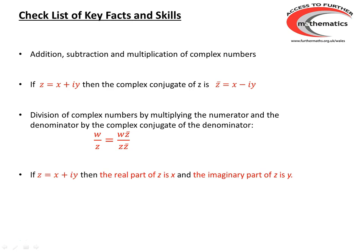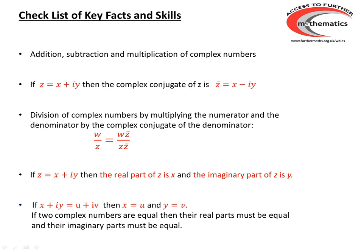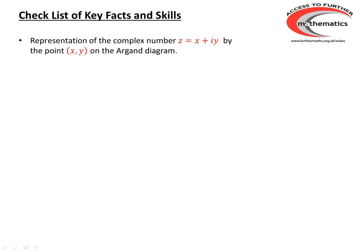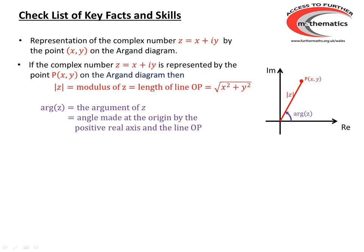If z is x plus iy, then we say that x is the real part of z, and y is the imaginary part of z. And if x plus iy is the same as u plus iv, then the real parts must be the same, and the imaginary parts must also be equal. We must be able to represent a complex number x plus iy by the point (x, y) on the Argand diagram.